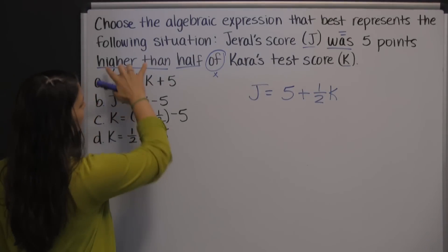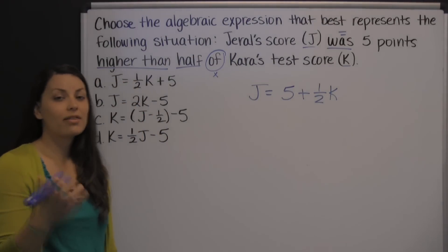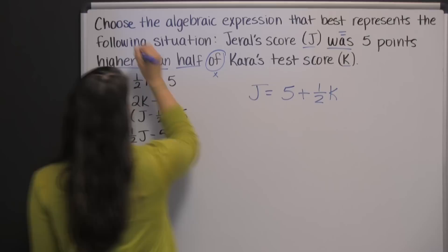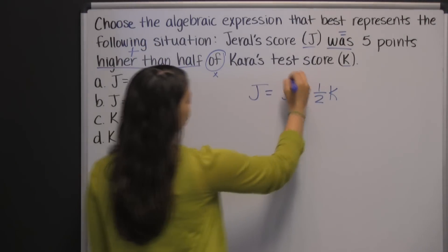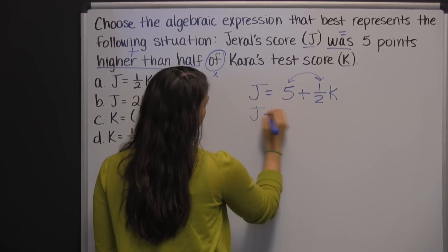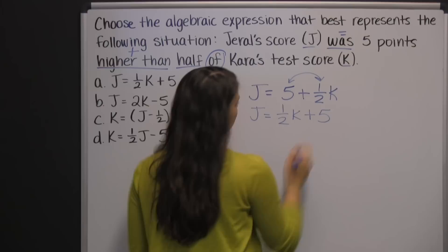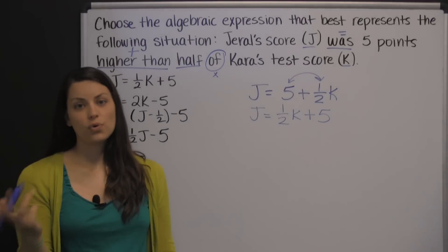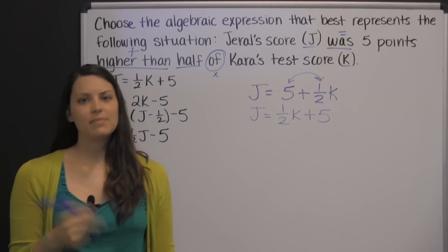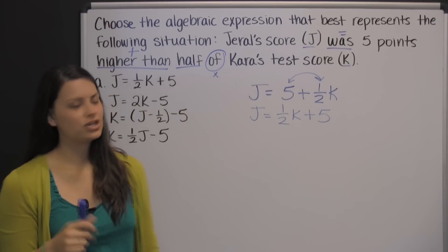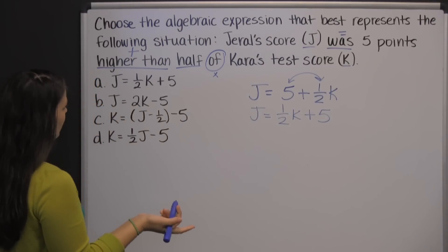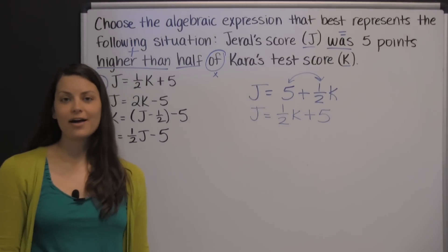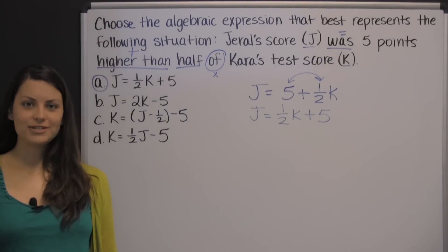Another thing with 'higher than,' 'greater than,' or 'more than' — the word 'than' tells you that you need to switch the order instead of writing five plus half K. You just switch these around. So it says J equals half K plus five. But really these say the same thing, since when you're adding, the order doesn't matter — you get the same answer. That's the commutative property of addition. So we see that A is our answer here.